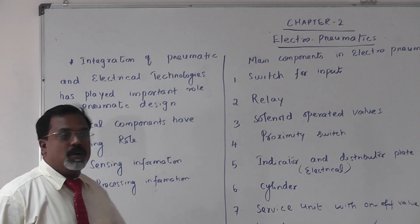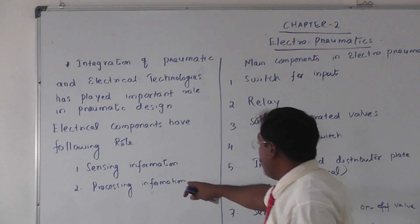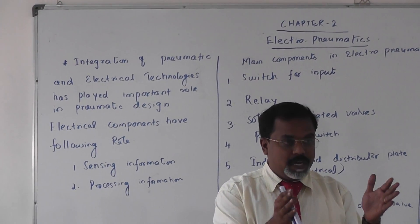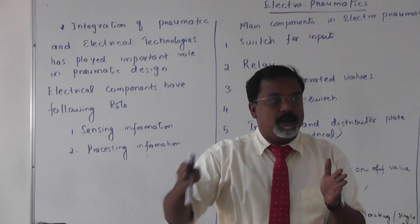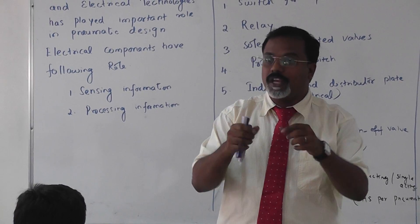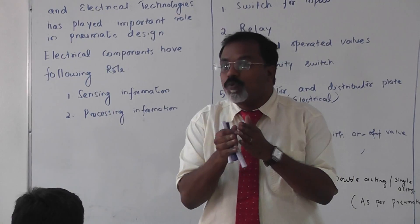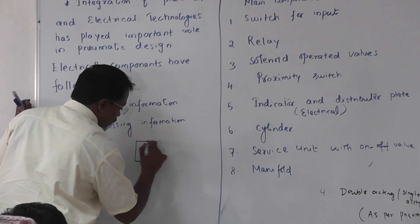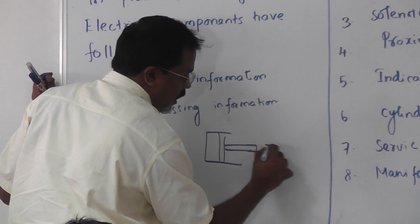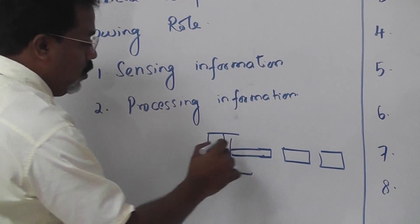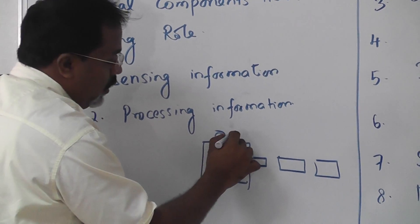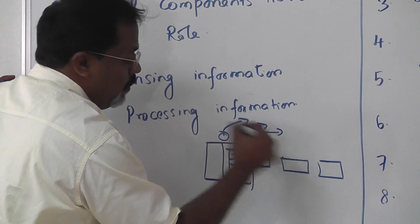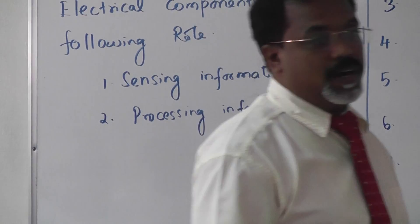The important roles electrical components can perform are: one is sensing information, and another one is processing information. Sensing information means — if you have a double acting or single acting cylinder and you want to find out how much the piston has moved, you can place one sensor or a set of sensors there. Based on the movement, it will give information on whether the piston is in the extreme forward or extreme reverse direction.